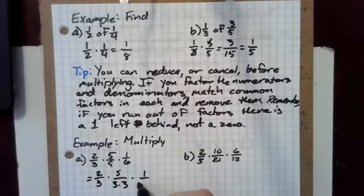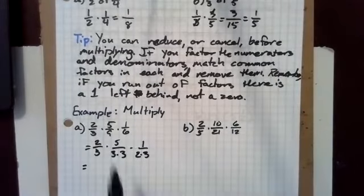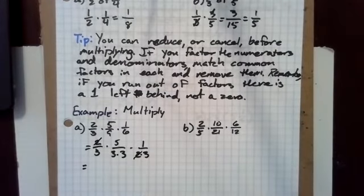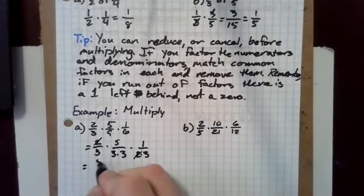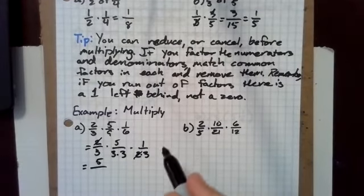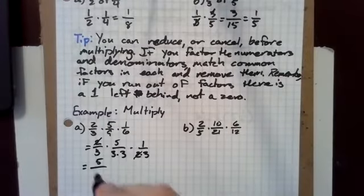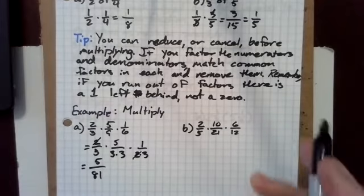And six, likewise, is two times three. So now I've got a two here and a two up there, and I can get rid of those twos. I have a five left in the numerator and four threes in the denominators, but three times three times three times three is 81. That's five 81sts.